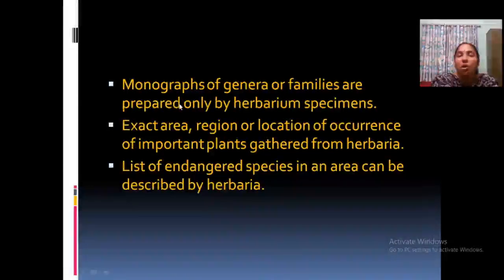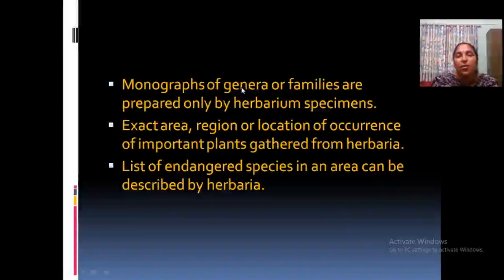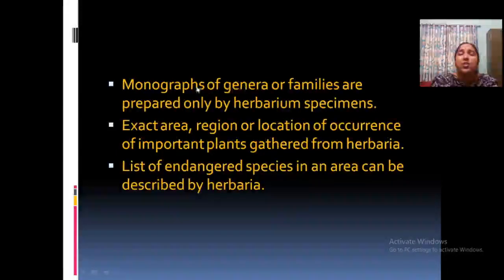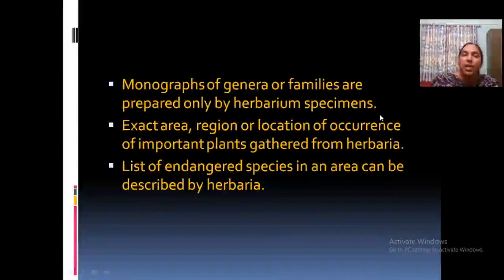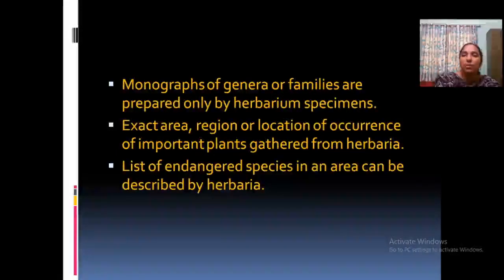Herbarium provides material for developing strategies for conservation and also helps solve queries of scientists, the public, and undergraduates. Monographs of genera or families are prepared using herbarium specimens. A monograph covers everything regarding a particular genus — for example, the genus Ficus, which has different species like Ficus aspera and many others. To prepare a monograph on Ficus, you have to check herbarium specimens. Region or location and its important plants are available through the herbarium. The list of endangered species is also available through the herbarium.